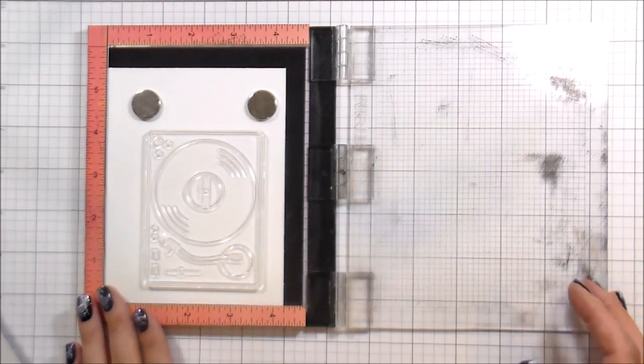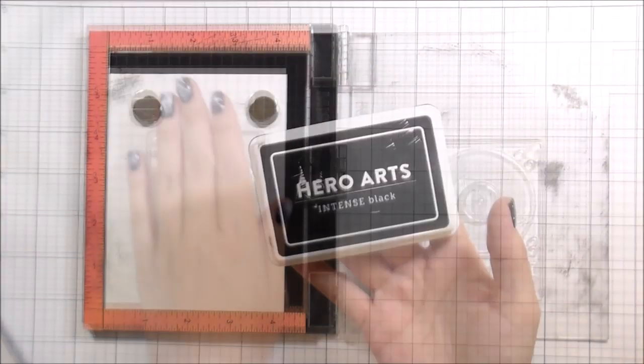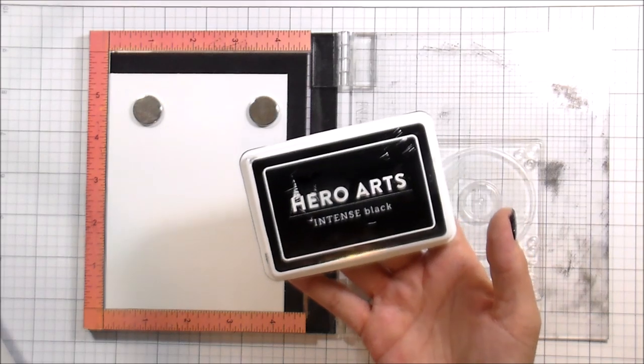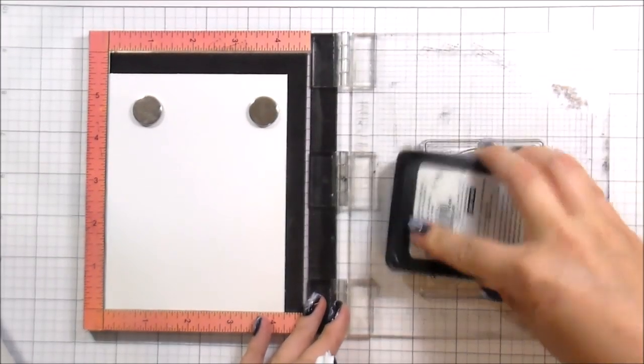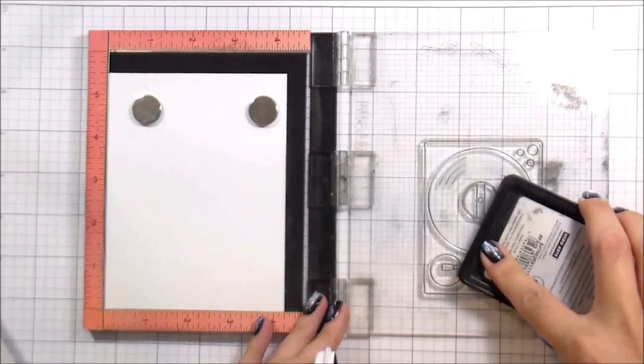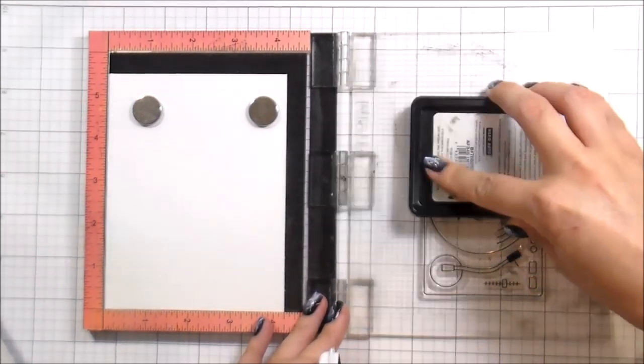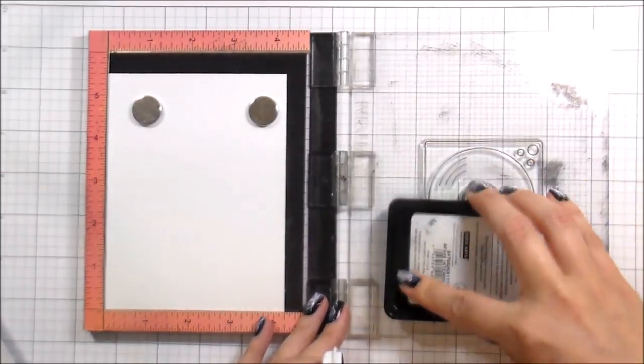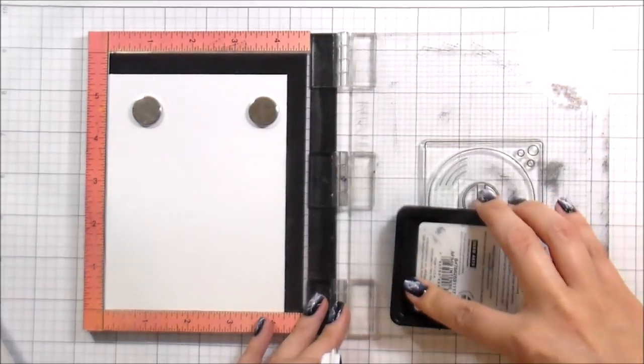So my whole premise here going into this was I wanted it to look like an above view of a desk. And so I'm going to stamp the record player as if it was sitting on the desk, and then I am going to add in some stickers and things that maybe it would be decorated with.